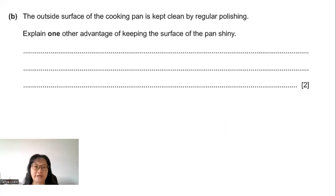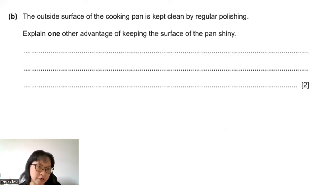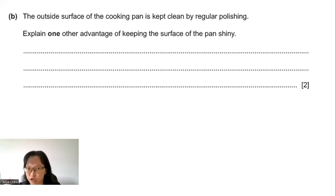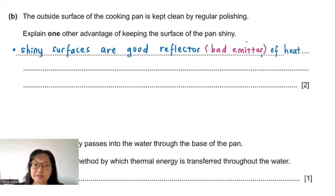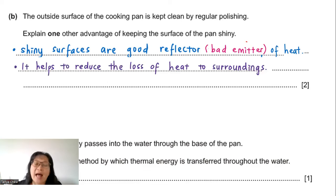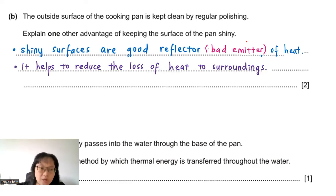Part B: The outside surface of the pan is kept clean by regular polishing. Explain one advantage of keeping the surface shiny. Shiny surfaces are good reflectors of heat, or equivalently, bad emitters of heat. This helps keep the water at a higher temperature for a longer period by reducing heat loss from the surface.